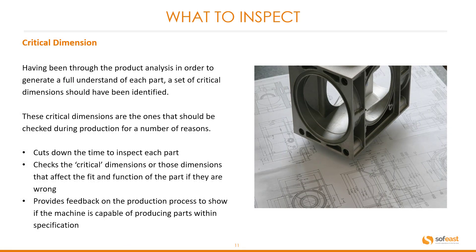What to inspect — critical dimensions. In order to deliver a full understanding of each part, a set of critical dimensions should have been identified. These critical dimensions are the ones that should be checked during production for a number of reasons: they cut down the time to inspect each part; they check the dimensions that affect the fit and function of the part if wrong; and they provide feedback on the production process to show if the machine is capable of producing parts within specification.